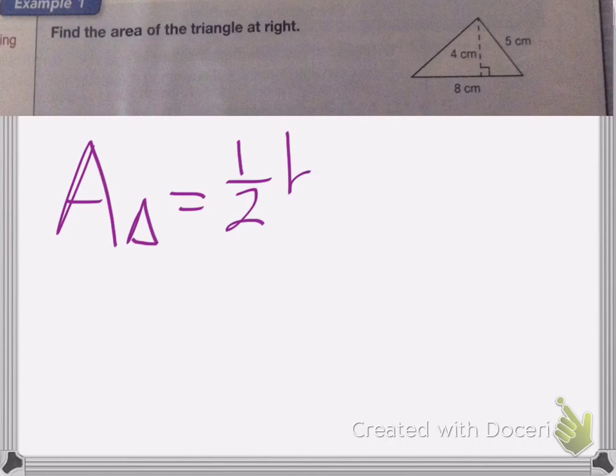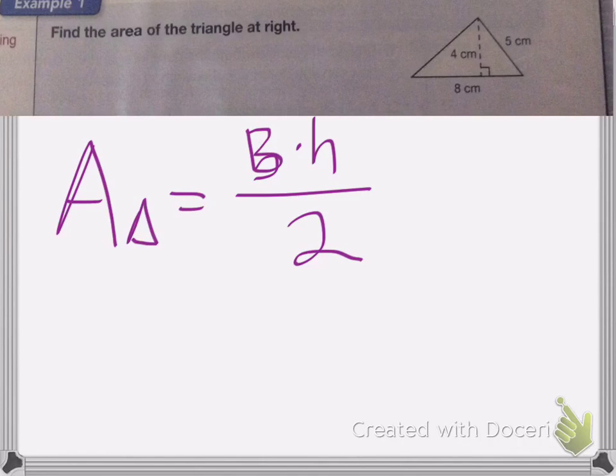So here, find the area of the triangle at the right. So I have 5 centimeters, 8 centimeters, and 4 centimeters. I need to figure out which ones I need to use. So if the area of my triangle is equal to one half the base times the height, or we can also say that it's base times height divided by 2. This one's a little easier to remember.